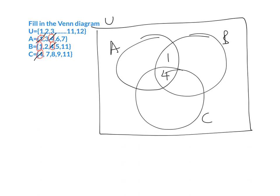We'll cross off the number one. Now I'm going to look at the intersection between B and C — they have the number 11 in common, so I'm going to pop that in there and cross that off. Then we do the same with A and C. They have the number seven in common, so I write seven in there and cross those off.